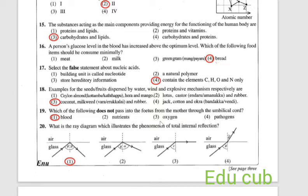Eighteenth one: examples for the seeds of fruits dispersed by water, wind and explosive mechanism respectively are. First answer is Ceylon almond (kotamba), hora and mango. Lotus, castor (endaru) and rubber. Third answer is coconut, milkweed (wara) and rubber. Fourth answer is jackfruit, cotton, okra (bandakka). The third answer is the correct one. The seeds which disperse by water, wind and explosive mechanism respectively are coconut, milkweed and rubber.